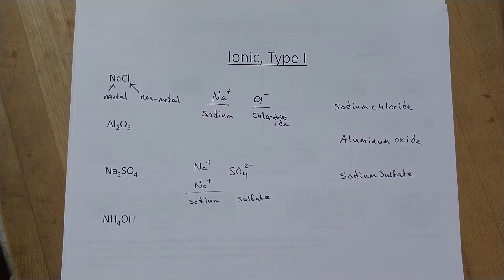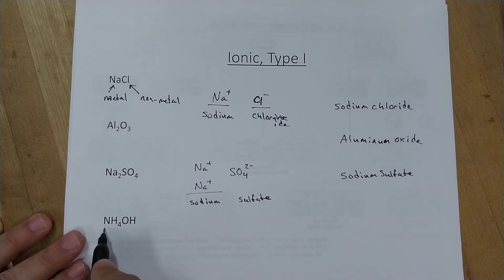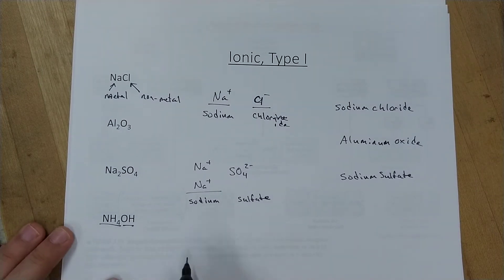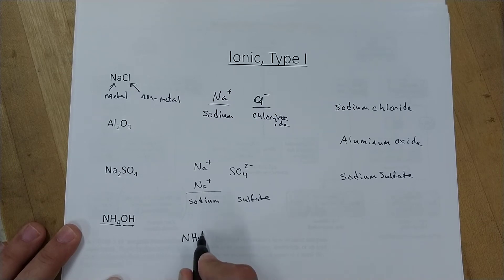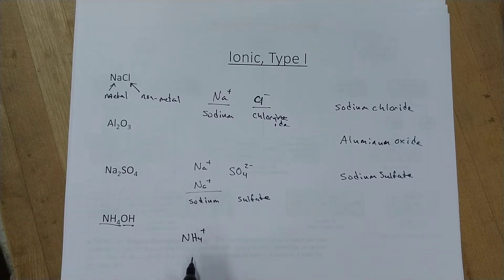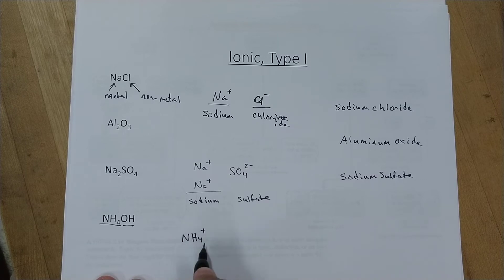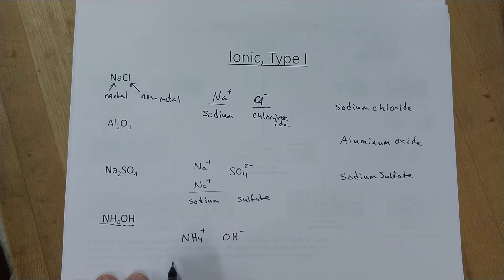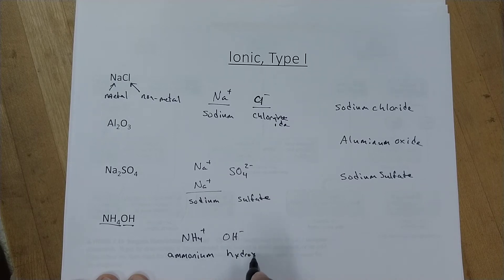The last Type 1 example is actually made of two polyatomic ions. The polyatomic cation — the only one you'll see in this class — is ammonium, and the polyatomic anion is hydroxide. So the name is ammonium hydroxide. That's ionic Type 1.